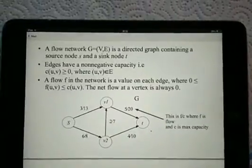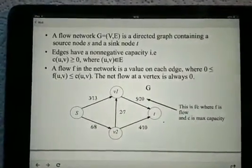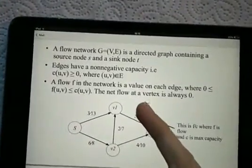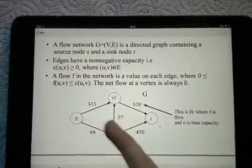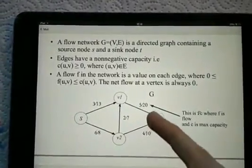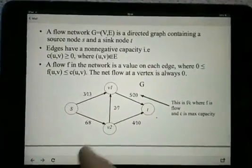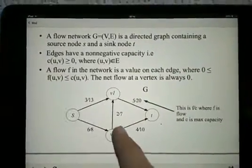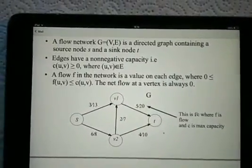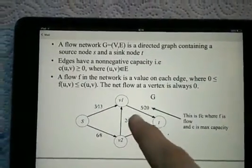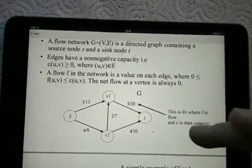In the Ford-Fulkerson method, there is a constraint that after each iteration, the net flow at a vertex must always be zero, which is to say that the sum of all the flows entering a vertex minus the sum of all the flows exiting a vertex equals zero. For example, with V1, 3 plus 2 equals 5, the sum of the flows entering the vertex, and 5 is the sum of the flows exiting the vertex. 5 minus 5 equals 0.